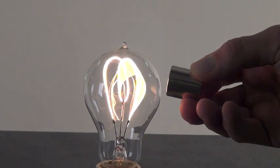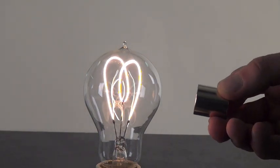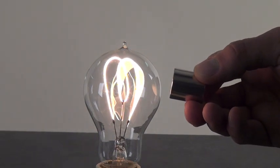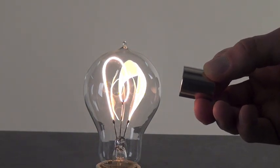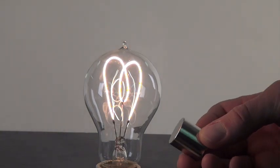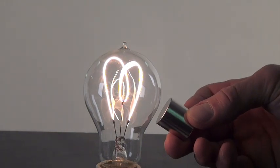The bulb's filament shows very vividly what we call the motor principle. This is a great way to show the relationship between electricity and magnetism using this demo.